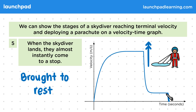Now you won't be expected to draw a graph like this one from scratch in an exam, though you could be asked to complete missing sections of it from a description. What you'll more likely be tested on is interpreting what each part of the graph tells you about the motion of a given falling object.